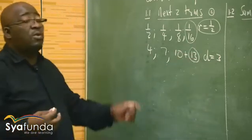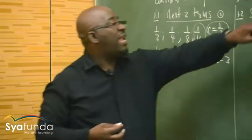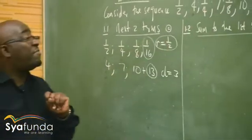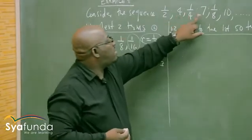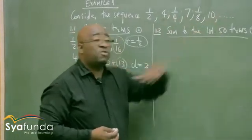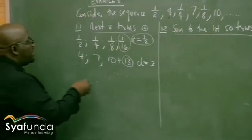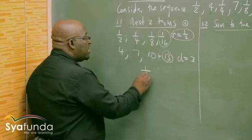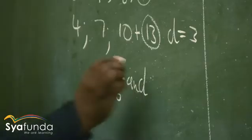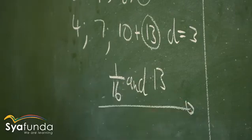The question wanted us to write the next two terms. After ten, the first one coming is a fraction. The next two terms are: one over sixteen and thirteen. So these are the next two terms — that's how you respond to a question like this.